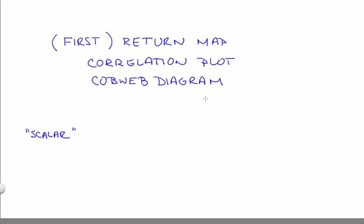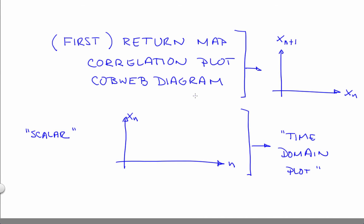It's a different way of plotting the iterates of a 1D map or other scalar data. Scalar, by the way, means it's just a single number, not a vector. Instead of xn versus n, we plot xn+1 versus xn.